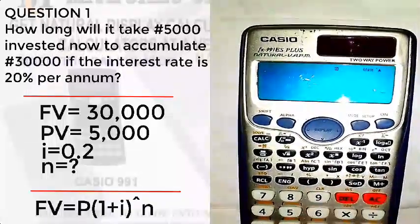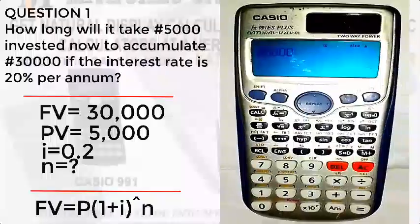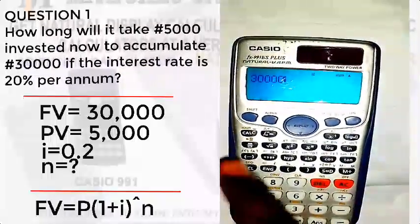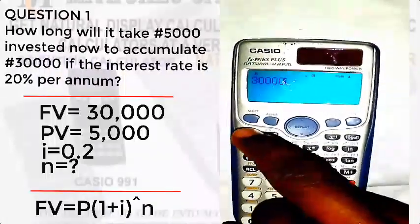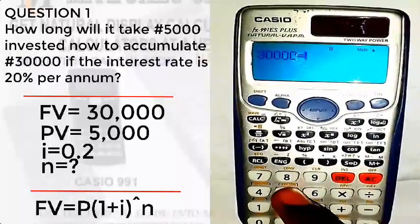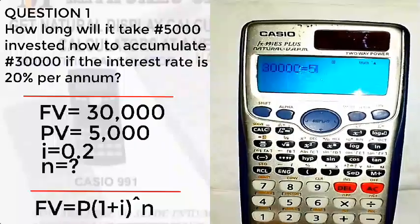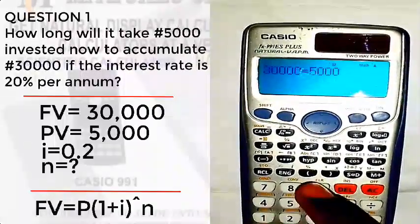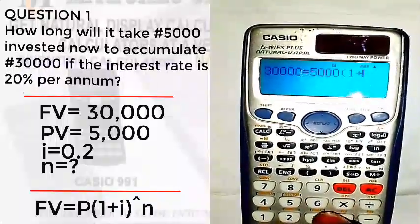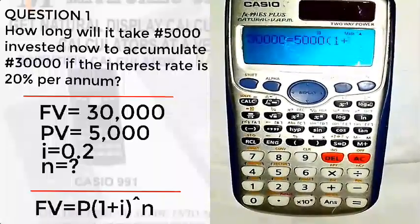What I need to do is to put 30,000 naira, so that's the future value. Now after typing the future value of the investment, then we click on alpha and then calc to have equal sign. Then we put the present value, that's 5,000 naira. Open brackets, one plus—based on the question we have here, we know the interest rate, that's 20 percent, 0.2.